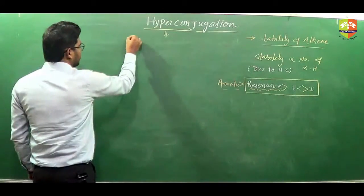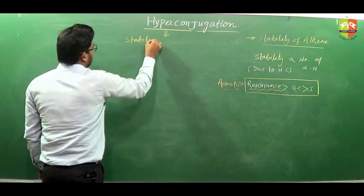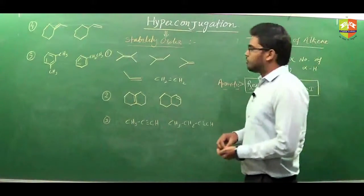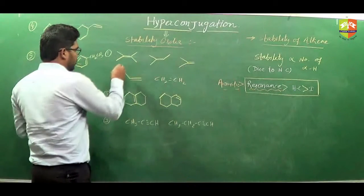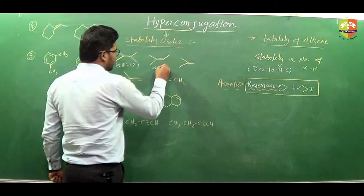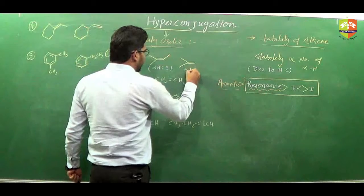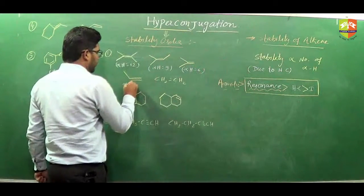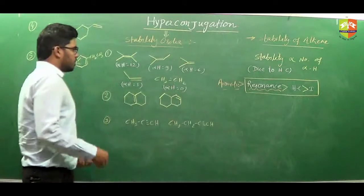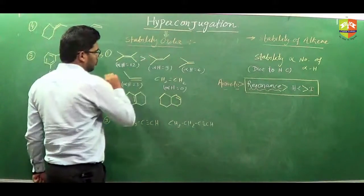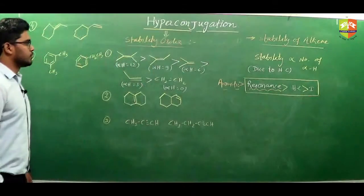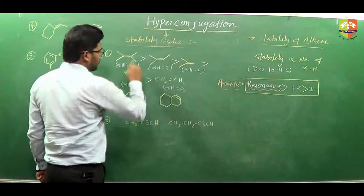We will see some examples now — all these questions require finding the stability order. In the first question, the number of alpha hydrogens is 12, then 9, then 6, then 3, then 0. Since only hyperconjugation is possible, the order of stability follows maximum alpha hydrogens first, decreasing in that order: first, second, third, fourth, and fifth.